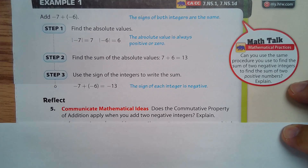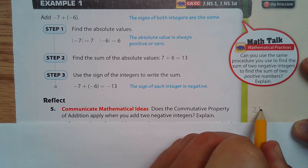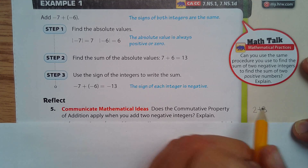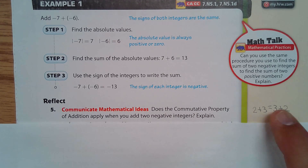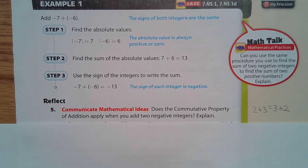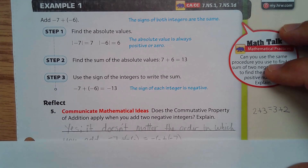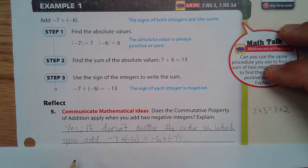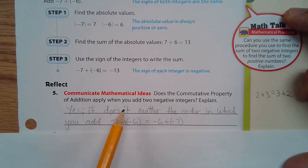Does the commutative property of addition apply when you add two negative integers? The commutative property says that two plus three equals three plus two — the order of addition does not change the result. Yes, it applies: negative seven plus negative six gives the same answer as negative six plus negative seven.